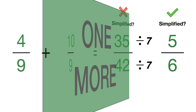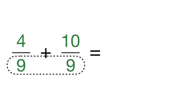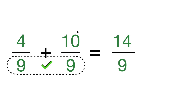Let's do one more for practice: 4/9 plus 10/9. The denominators are the same. Add the numerators: 4 plus 10 is 14. Keep the denominator the same as 9, giving us 14/9. Is this simplified? These two numbers do not share any common multiples.